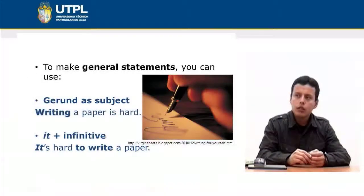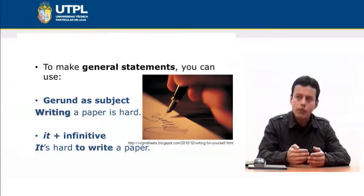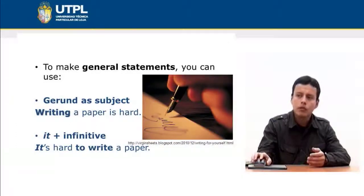To make general statements, you can use a gerund as the subject — for example: 'Writing a paper is hard.' But if you want to use an infinitive, it is better to use the structure 'it + infinitive': 'It is hard to write a paper.' It is incorrect to say 'To write a paper is hard' — the 'it' structure is preferred.